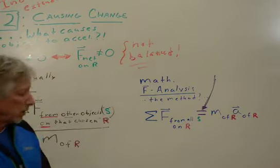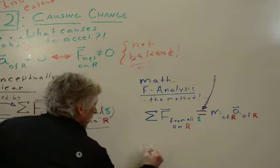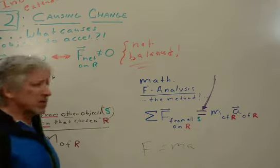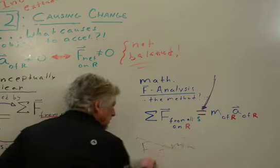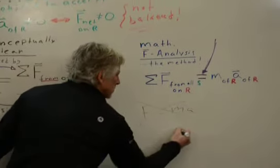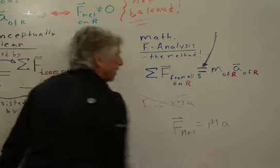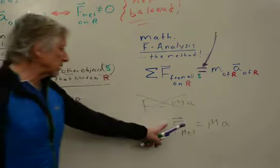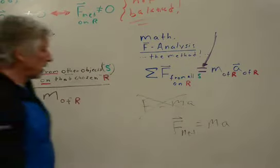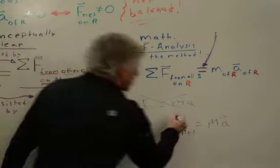So people say, for example, one way people write this is you might see F equals MA in a low-level class. Yeah, kind of fine, but that is horrible. And you go, well, let me make that better. Oh, yeah, these are vectors. F net equals MA. Well, that's a problem because that's a vector and that doesn't show a vector notation. So, you know, there's the vector over there. That's getting better. But even that's not good.